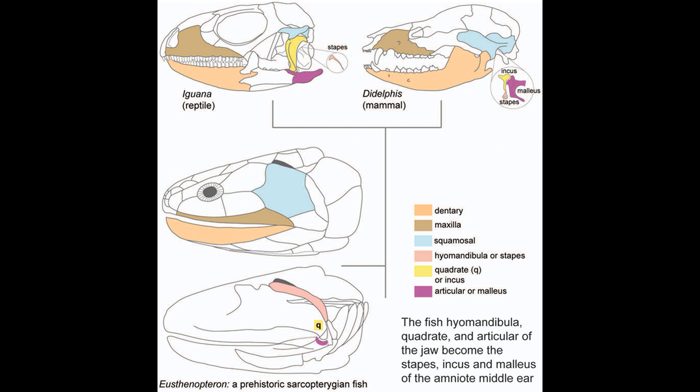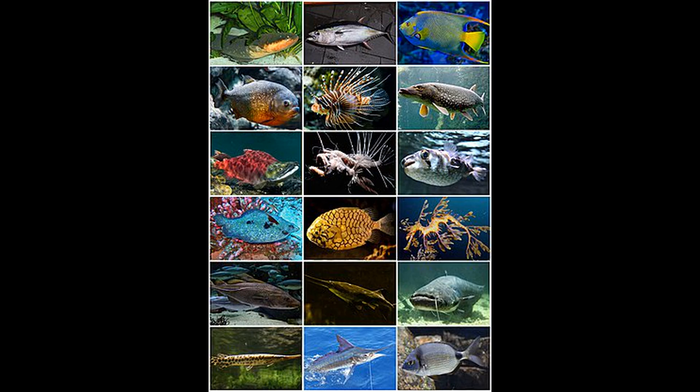Instead, a portion of this structure now functions to transmit sound waves to the inner ear, becoming the stapes. We have previously noted how two of the inner ear bones unique to mammals — the incus and malleus — were derived from the quadrate and articular bones, which originally composed the joints of the jaws. It turns out that the stapes are similarly derived from bones that originally functioned for jaws.